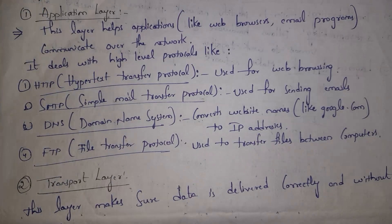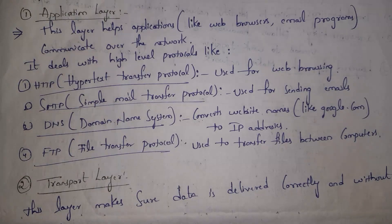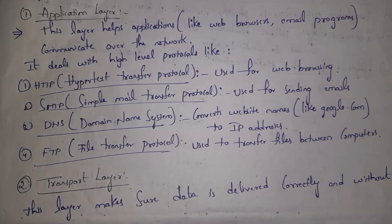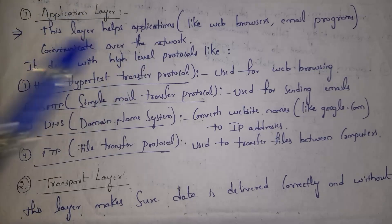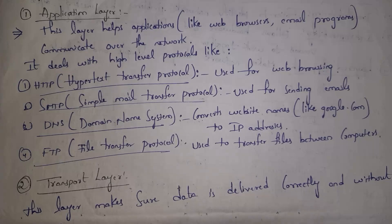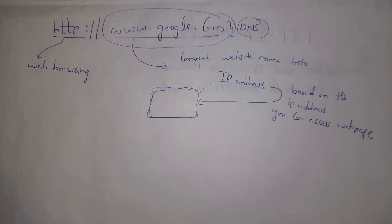First, the Application Layer. The Application Layer deals with applications that are used to access the internet. For example, Google Chrome and Firefox — by using those applications we can access the internet. We can do web browsing, send emails, send files, etc. So the Application Layer helps applications communicate over the network. This layer contains four important protocols.